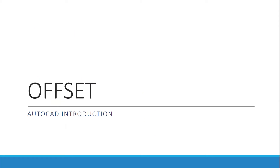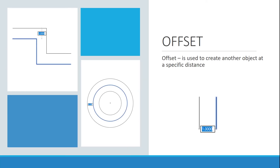Let's first start with the offset command. This is going to be a super useful command — it's going to allow us to create a distance between two objects. When using the offset command, I can basically make a copy of an object at a certain distance. You're going to see in the lecture demos different ways you can utilize this command and make things rather quickly.